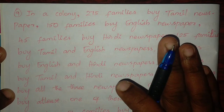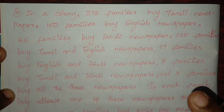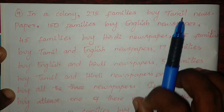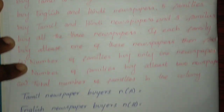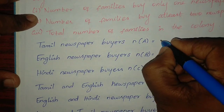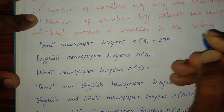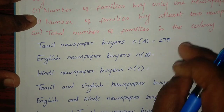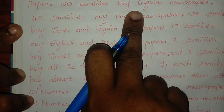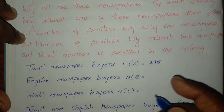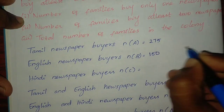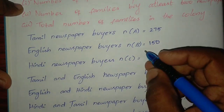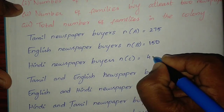275 families read Tamil newspaper. Let Tamil newspaper be A, English be B, and Hindi be C. So n of A is 275, n of B is 150, n of C is 45.